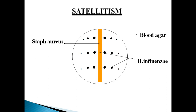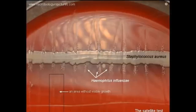These bacteria cannot grow by themselves — they require Staphylococcus bacteria. When you streak Staphylococcus bacteria on a plate at 90 degrees angle, you can easily find colonies of Haemophilus influenzae alongside the Staphylococcus streak.